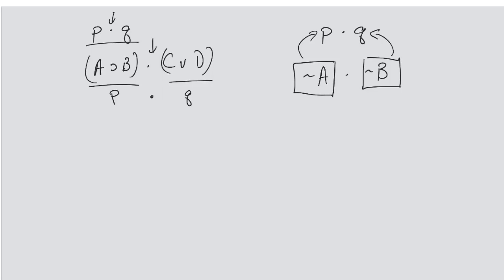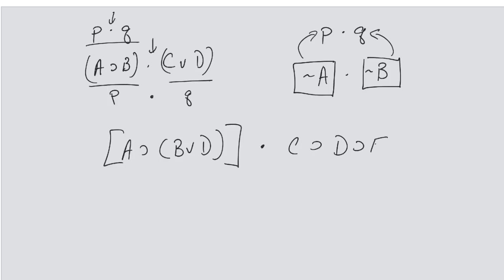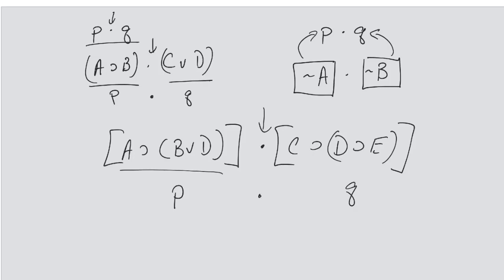This is where statements can get very complex even though they might be very long. Using the same conjunction model, I could have something like 'A therefore B or D' conjoined with 'C therefore D therefore E.' At the end of the day, that's just a conjunction — this whole piece is a substitution for P, this whole thing a substitution for Q, and all I have is a particular substitution instance of that conjunction. This works with any connective we have.